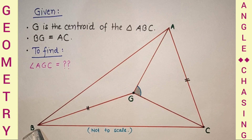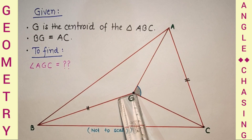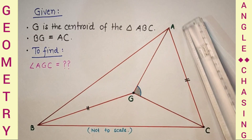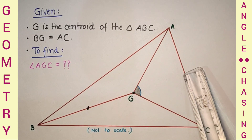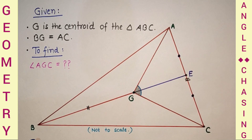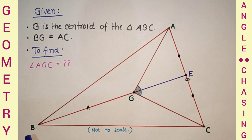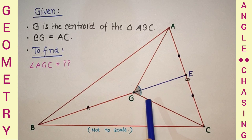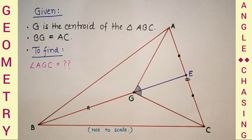So if we extend BG, it will intersect AC at a point — let us call it E. BG is extended to E. Since G is the centroid, BG extended will bisect AC, because BG is the median.